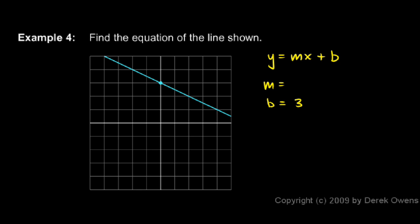The slope we get by taking two points on the line. This line crosses the grid points on our graph, so it's pretty easy to see. If you look at these two points, we go down 1 and over 2.